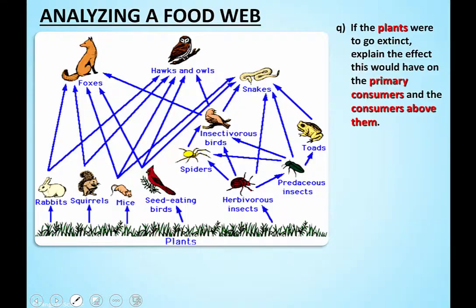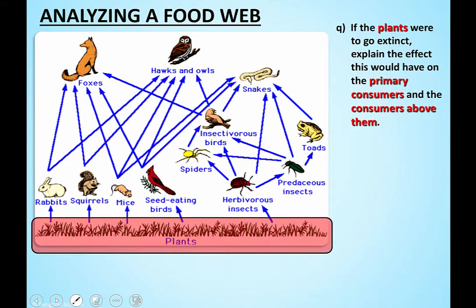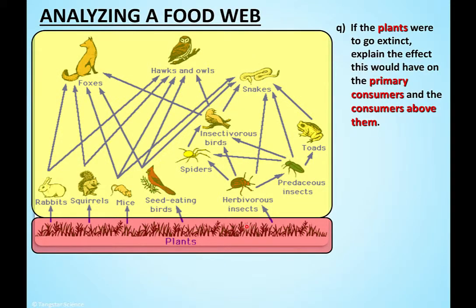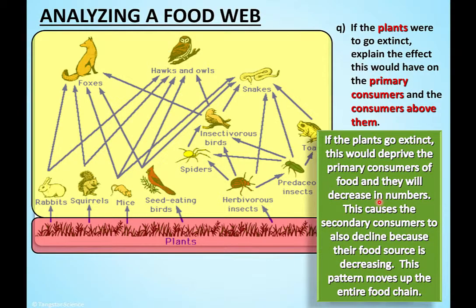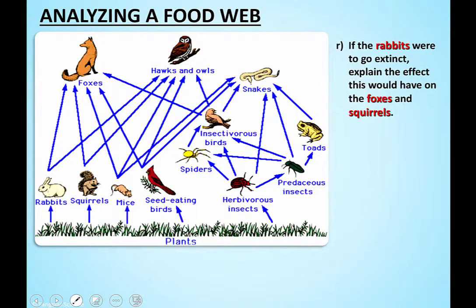Let's talk about extinctions. If every plant here vanishes, all the animals above them starve - their food source is gone. You might say the fox can just stick to insectivorous birds, but those birds eat things that also depend on plants, so everything collapses above. All because you removed the plants - it doesn't seem like a major thing, but everything gets impacted, resulting in mass extinctions.